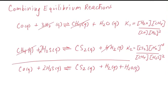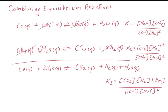And we can write an equilibrium expression for this, where we have K3 is equal to the concentration of the CS2 times the concentration of H2 times the concentration of H2O divided by the concentration of CO divided by the concentration of H2S squared. And so now the question is, can we come up with a relationship with K1 and K2 that will allow us to determine the value of K3? And we can.